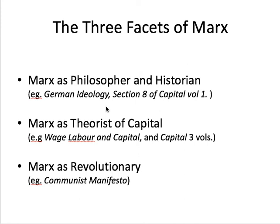Marx was also criticizing the increasing commodification of labor — the idea that people had to sell their labor time in order to live. He also develops the idea of alienation. In an artisanal mode of production, the master craftsman is not alienated from his labor: he controls all aspects of production and can make things for himself. Under a capitalist mode of production, especially in a factory system, all workers are alienated from their labor because everything they're working on goes to somebody else — all they receive in exchange is a wage. This is what Marx means by alienation and exploitation.